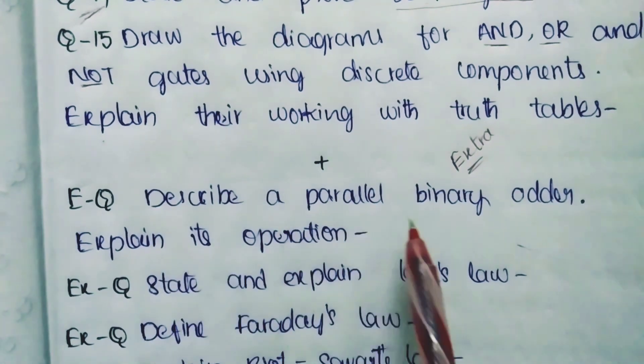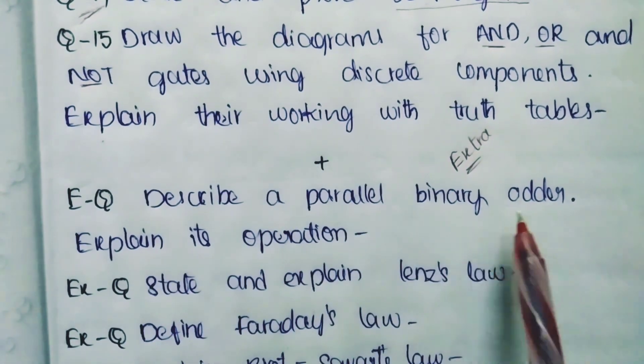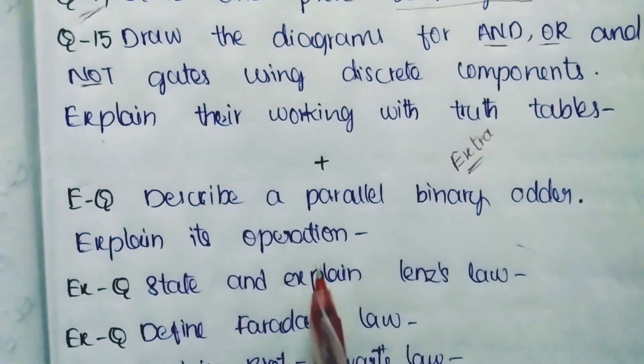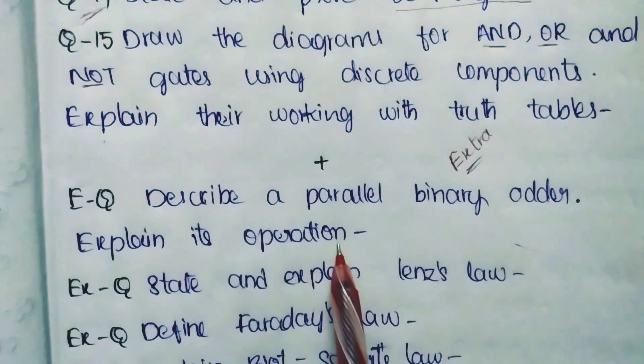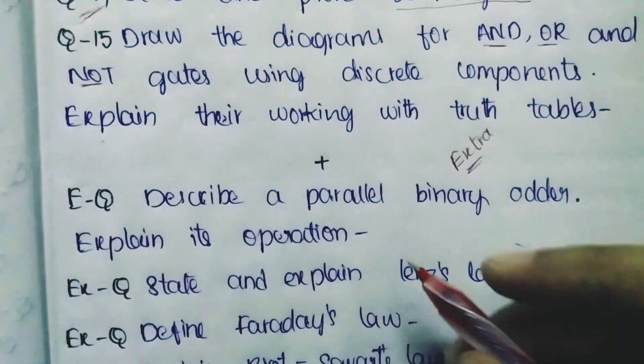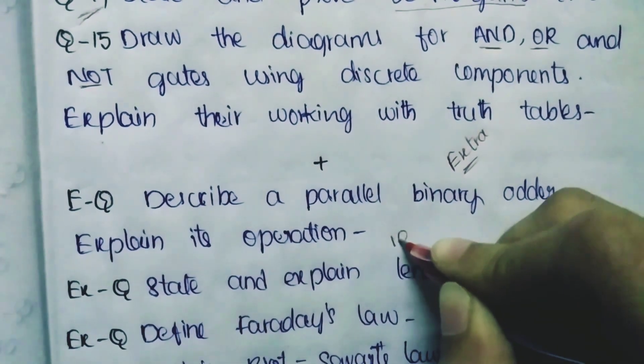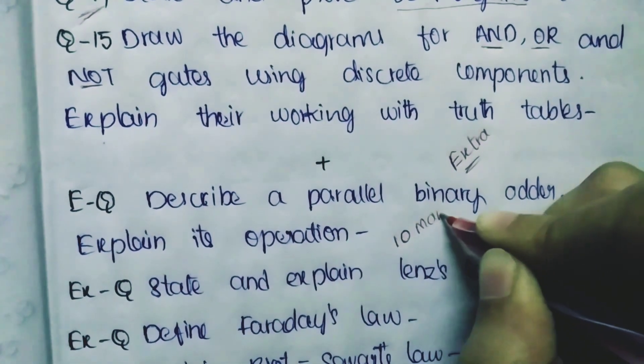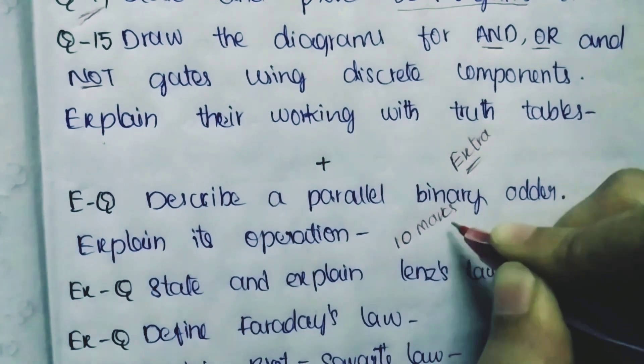Extra Question Number 1: Describe a parallel binary adder and explain its operations. This is a 10-mark question and is an extra question.